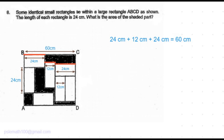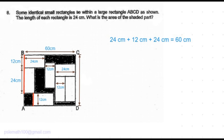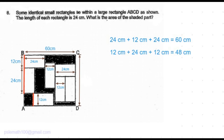Now let's find the width of the larger rectangle. The width is the sum of the line segments marked in red. The middle section is the length of the smaller rectangle, which is 24 centimeters, and on either side we have the width of the smaller rectangle, which is 12 centimeters each. The sum of these three line segments gives us 48 centimeters, which is the width of the larger rectangle.